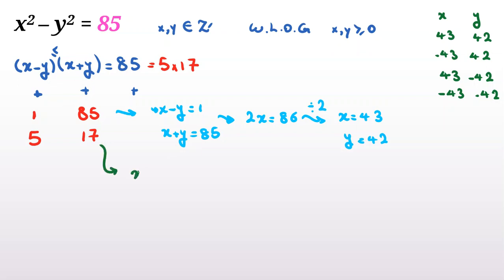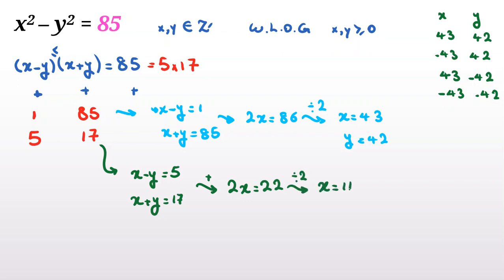Case 2: x minus y equals 5 and x plus y equals 17. Adding these two equations gives 2x equals 22, so dividing both sides by 2 gives x equals 11. Then 11 minus y equals 5, so y equals 6, and checking: 11 plus 6 equals 17. The solutions from this case are: (11, 6), (−11, 6), (11, −6), and (−11, −6). So we have found eight answers in total for this problem.